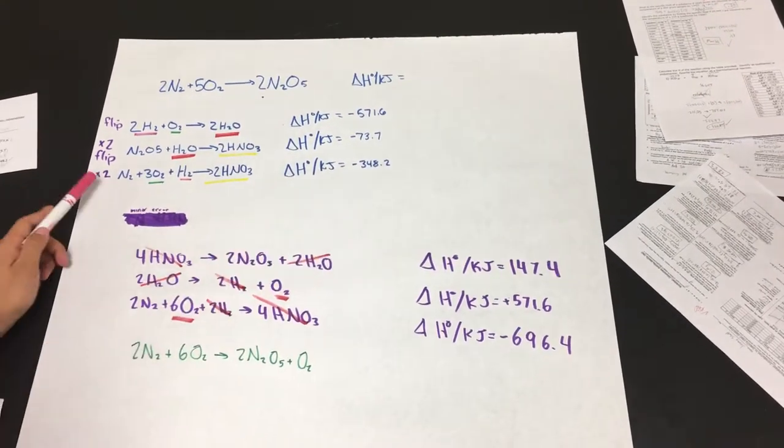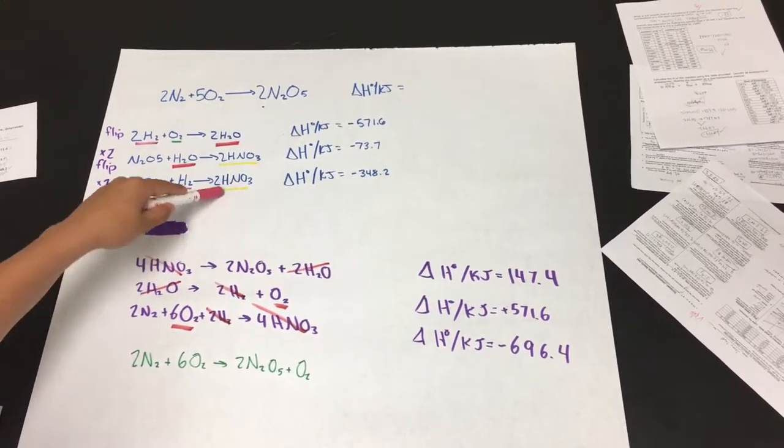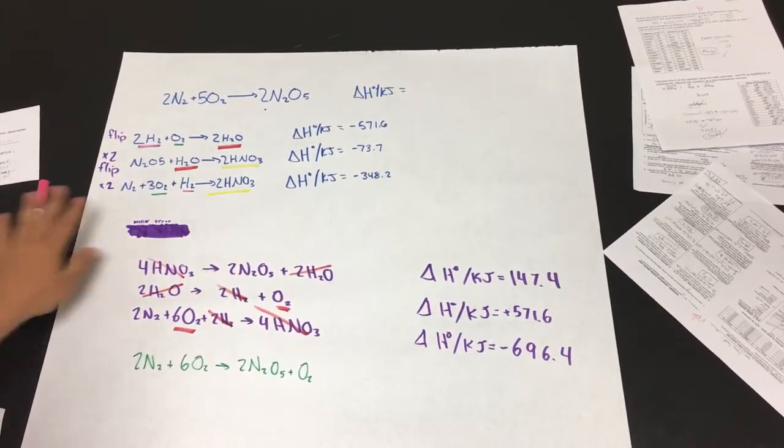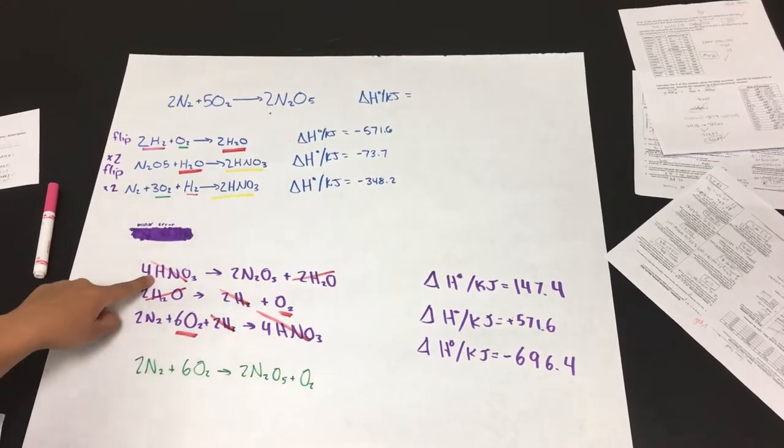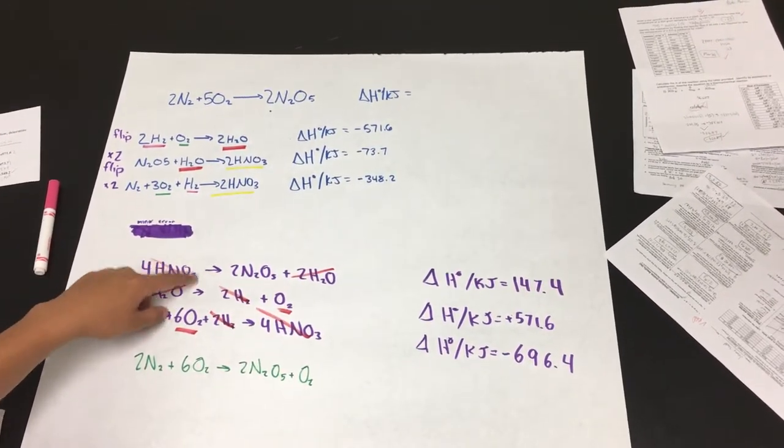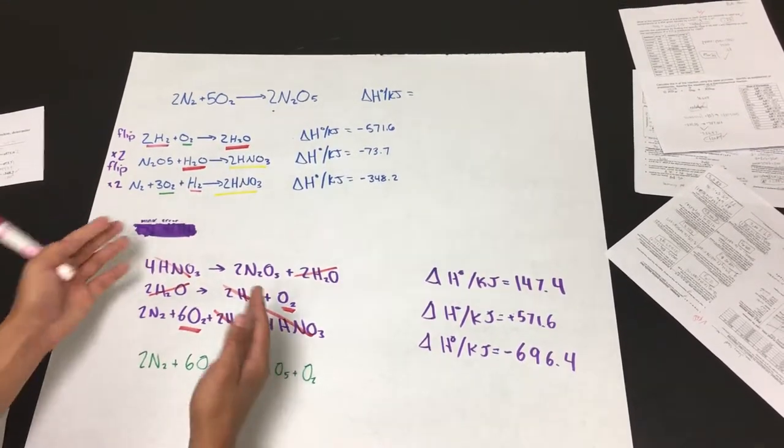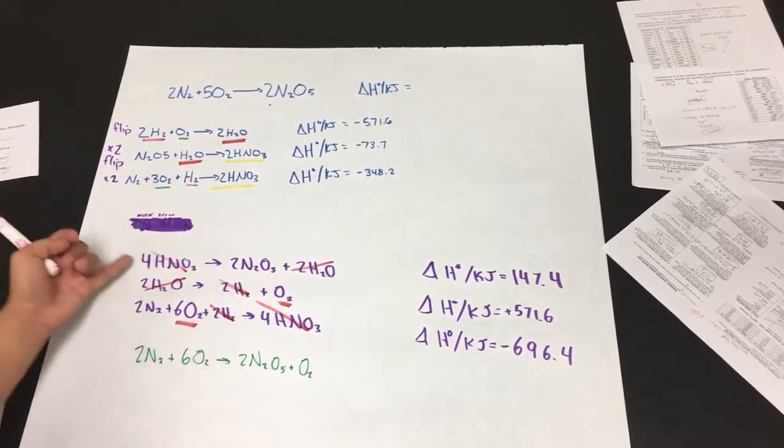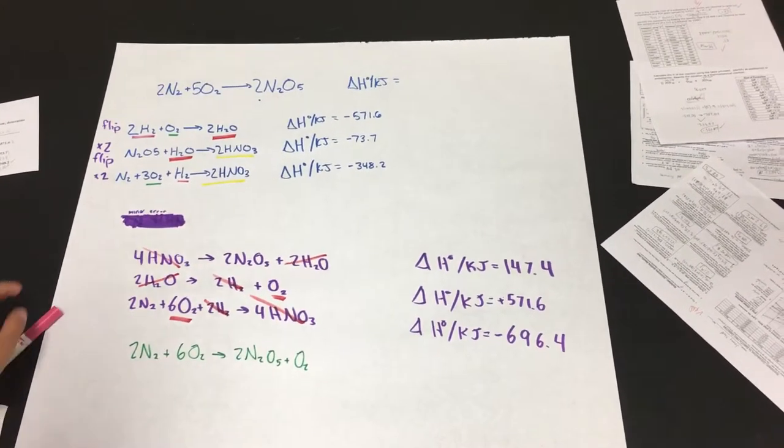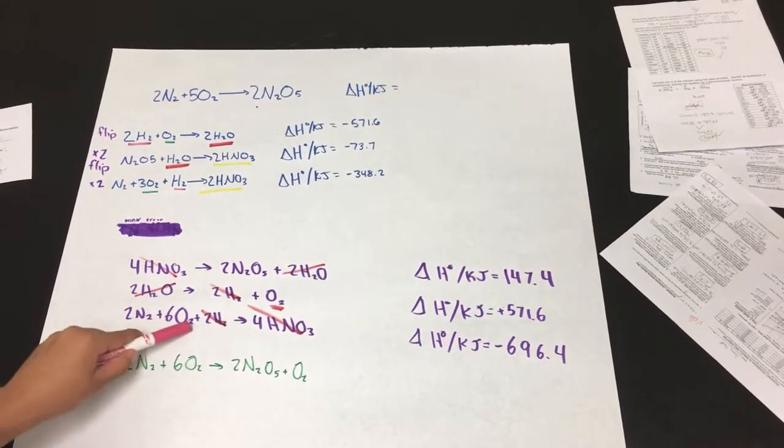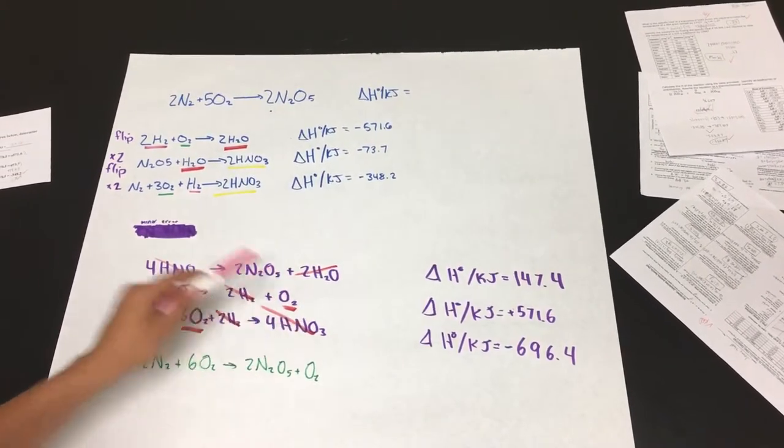And for the last equation, it is multiplied by 2 because for the 4HNO3, we have to multiply it by 2 so we can cancel it out later. And it's already on the product side and the other one is on the reactant side. So we don't know if flip is needed. So that will come out to be 2N2 plus 6O2 plus 2H2 yields 4HNO3.